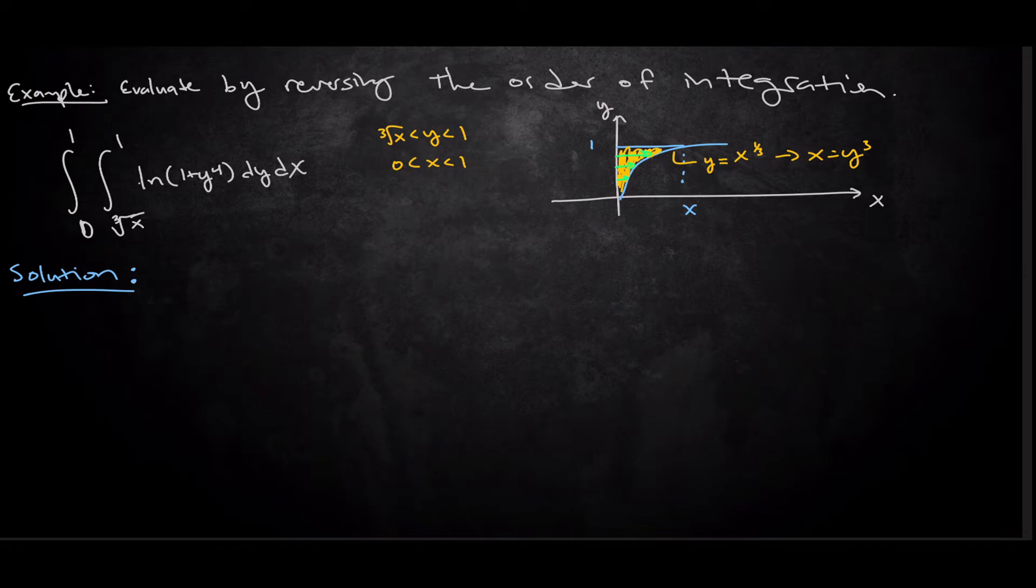Now these bounds are gonna tell me that x is going from 0 to y cubed. All the while y is between 0 and 1. So it's very nice in this case, y is also 0 to 1. So this is going to be the integral from 0 to 1, integral from 0 to y cubed, natural log of 1 plus y to the 4, dx dy.